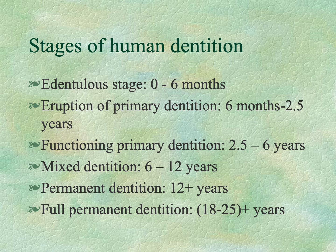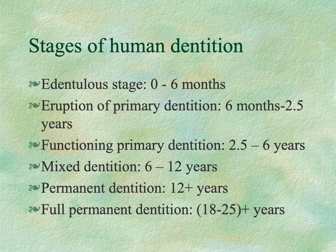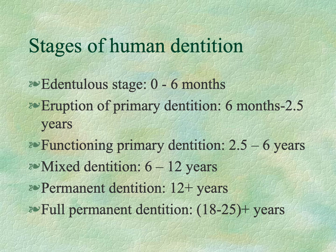The stages of human dentition begin with an edentulous stage from zero to six months. Eruption of primary dentition starts at six months and continues until two and a half to three years. The functioning primary dentition lasts from two and a half to six years. The mixed dentition, where both primary and secondary teeth are present, runs from six to twelve years. The permanent dentition starts at twelve years, with the full permanent dentition complete between 18 and 25 years, due to the third molars sometimes erupting late.